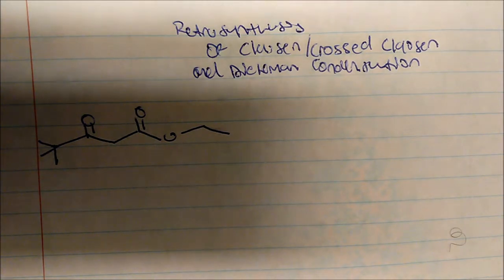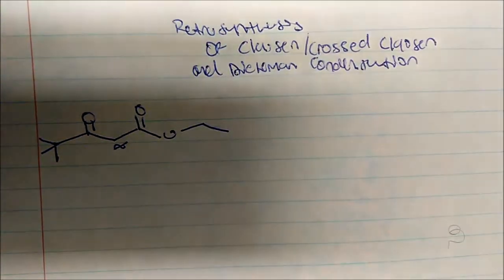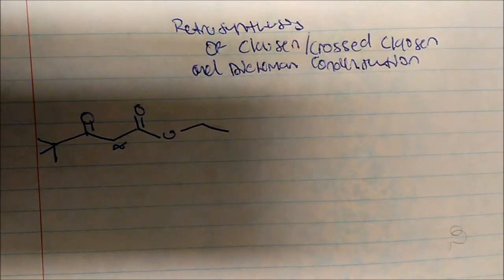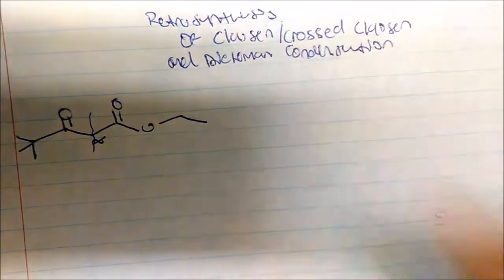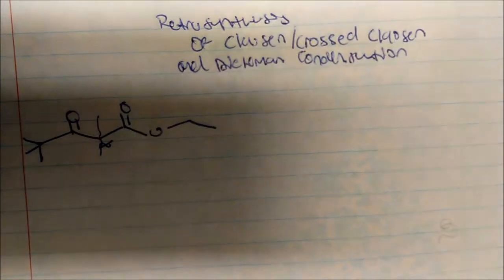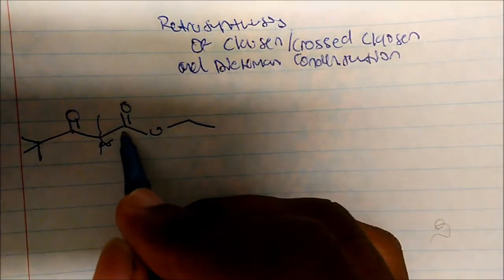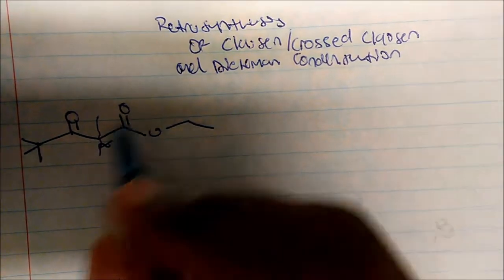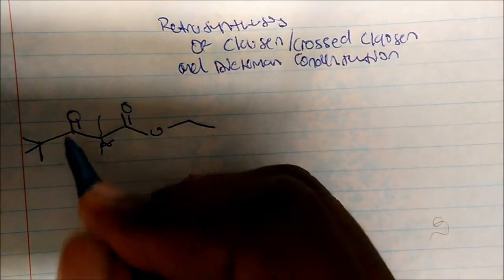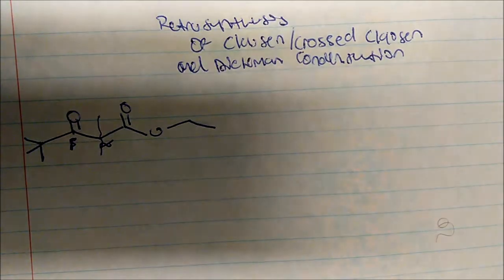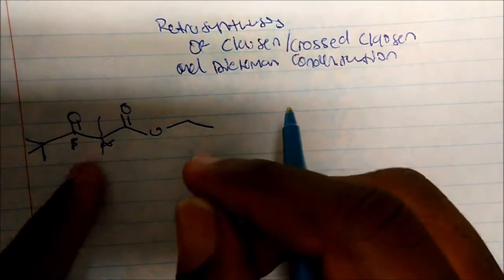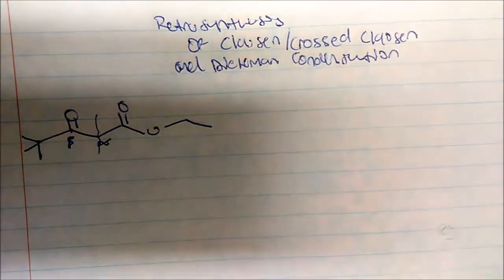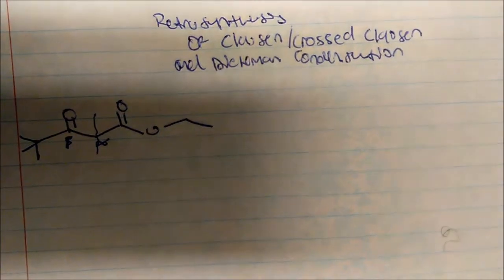So locate your alpha carbon - my alpha carbon is here. Now the thing with beta-ketoester and beta-diketone is that once you locate your alpha carbon you could split it, and then what's your beta carbon? The beta carbon is not the one that has a leaving group - it's the one that has just the carbonyl, but you're going to attach a leaving group there. So this is my alpha carbon, and this has to be my beta carbon with a leaving group attached.